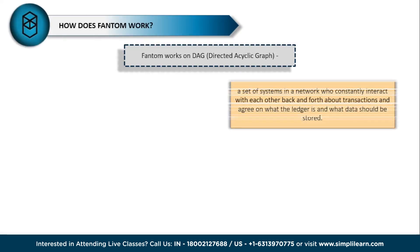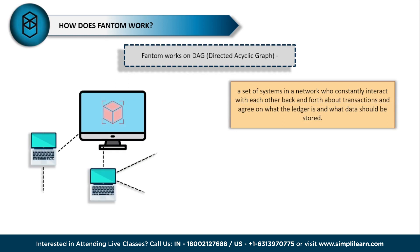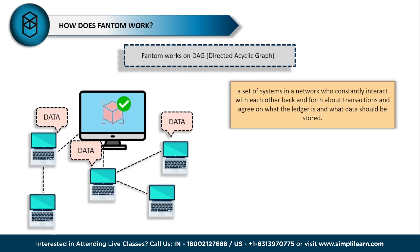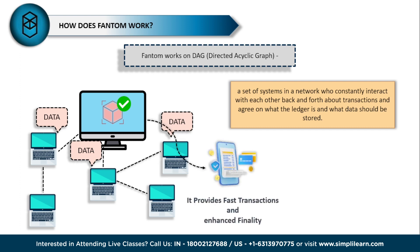Fantom basically works on DAG, or Directed Acyclic Graph. In a DAG, there is a set of systems in a network that constantly interact with each other back and forth about transactions. Using this concept, they agree on what the ledger is and what data should be stored on it over time. This confirms the finality of the transaction and makes sure it is time-effective.